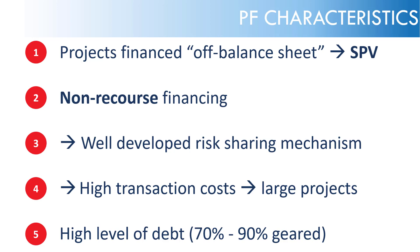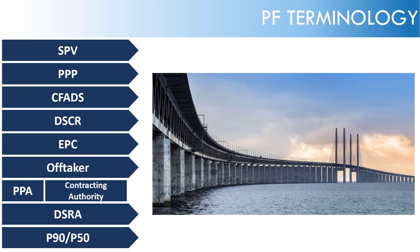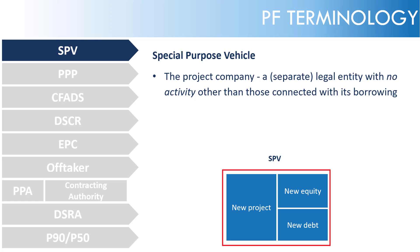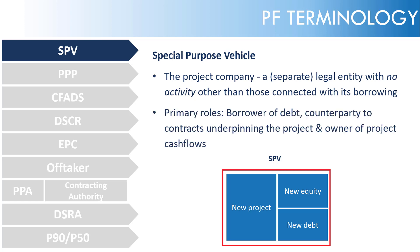Let's turn our focus to project finance terminology — the key terms that will come up again and again when going through a project finance deal. Starting with SPV: Special Purpose Vehicle. That's the project company, a separate legal entity with no activity other than those connected with its borrowing. It's not permitted to perform any function other than developing, constructing, and operating the project. This is critical because the lender has security over the cash flows arising from operating the asset. No other party has claimed those cash flows in seniority to the lender, with the exception of the tax authority and trade creditors.